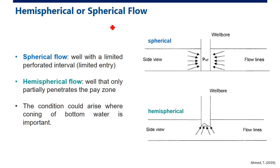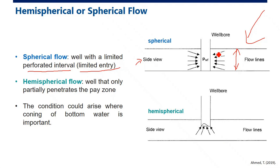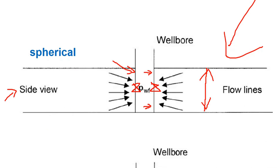For hemispherical or spherical flow: spherical flow occurs when we have a well with a limited perforated interval, also called limited entry. If we only perforate a fraction of the reservoir thickness, the flow shape will be like a ball — a sphere — with flow converging from all surrounding area into the perforations.